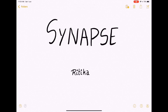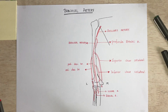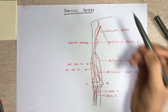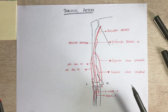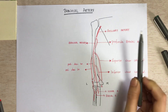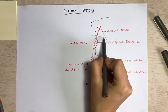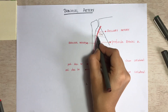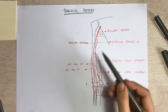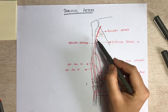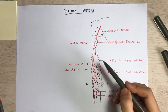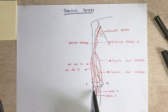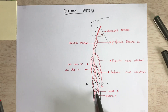Hello everybody and welcome back to Synapse, this is Ritika. Today we'll talk about the brachial artery. The brachial artery is a continuation of the axillary artery below the lower border of the teres major muscle, where the axillary artery continues as the brachial artery.